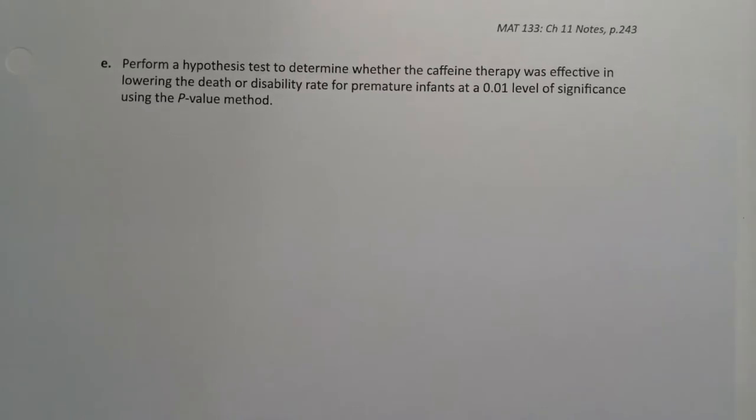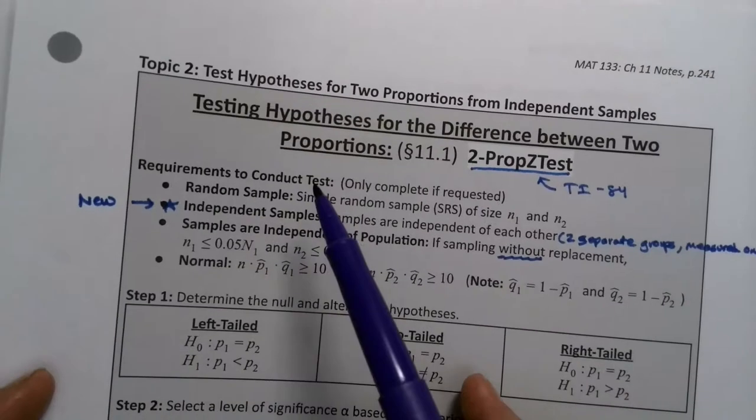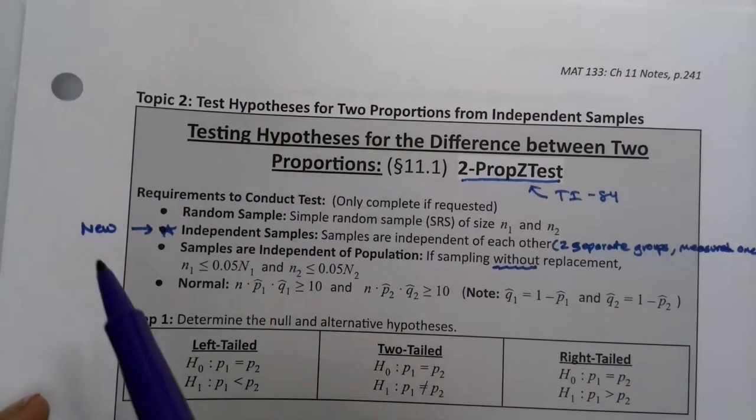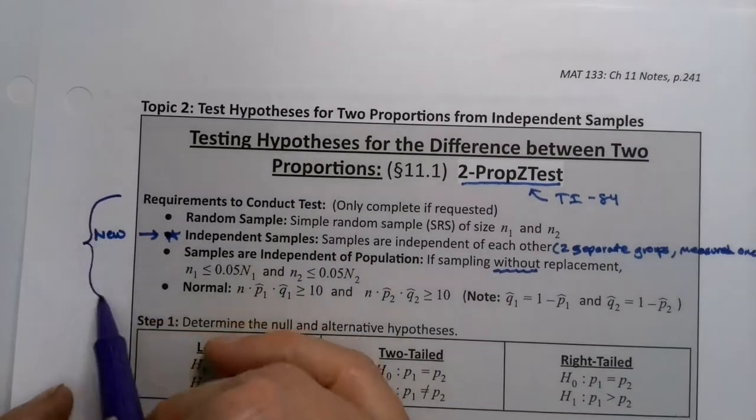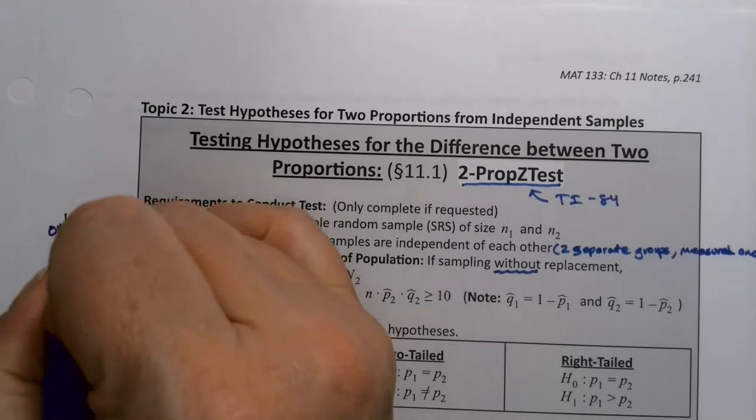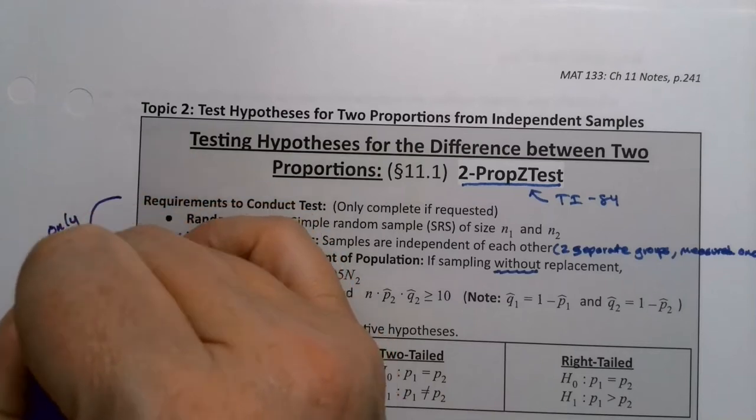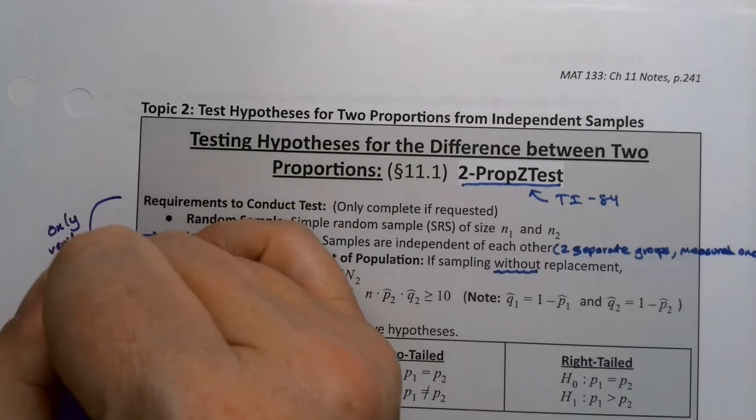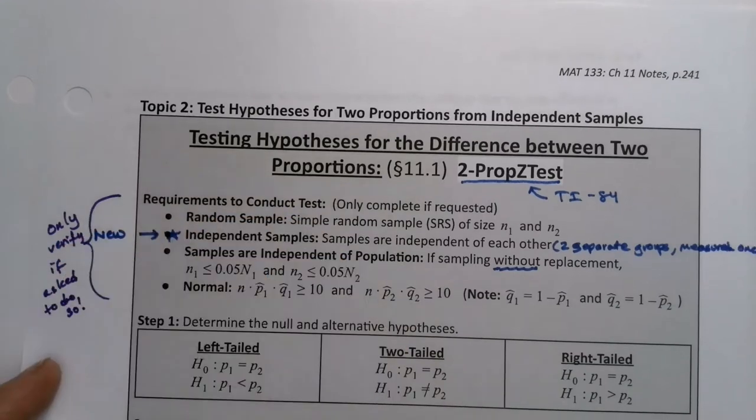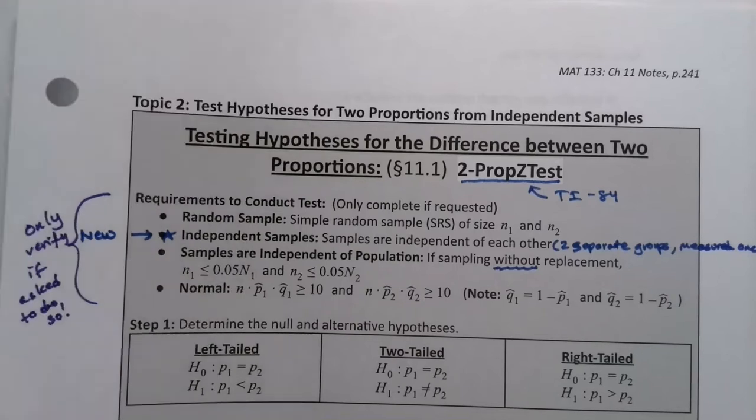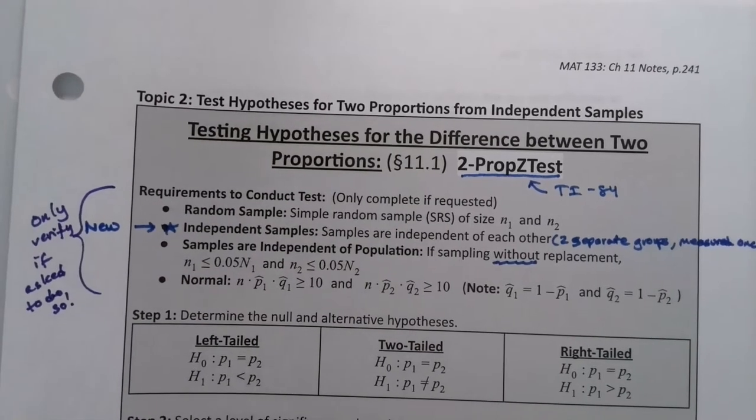We need to do all of our steps. So we've done the requirements verification piece at the top, and you only do these if you're asked. So you only verify if asked to do so. But we've done that, so now it's time to run all the steps.